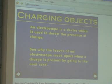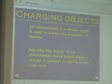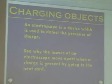An electroscope is a device which is used to detect the presence of charge. The leaves of an electroscope move apart when a charge is present. We'll demonstrate that in a second. Just before we get there, Louise, if you can just pan across to this.